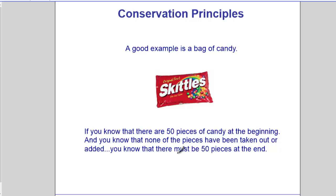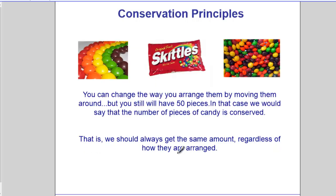A nice example of how conservation comes into play is candy. If we know there are 50 pieces of candy at the beginning, there must be 50 pieces at the end. If there are 50 pieces of popcorn in the beginning, there are 50 at the end. The total net quantity stays the same. It just shifts around from one place to another, or one form to another. What you start off with is what you end up with — that's what it means when something is conserved.